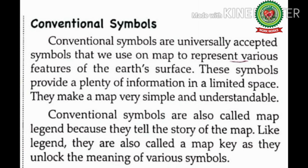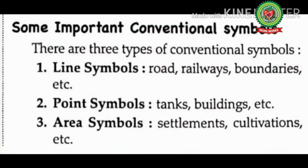Conventional symbols are also called map legend because they tell the story of a map like a legend. They are also called a map key — the other name of legend is map key. They unlock the meaning of various symbols; the legends or map key explain what they mean. For example, a triangular symbol on a map is used to indicate a mountain, or a black dot symbol is used to indicate the capital of any state.